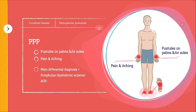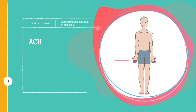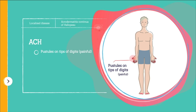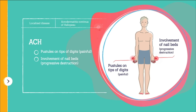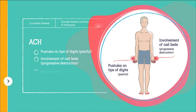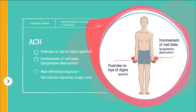The main differential diagnosis for PPP is pompholyx, also known as dyshidrotic eczema. In PPP, the nails may be affected, which can make it difficult to differentiate clinically between PPP and ACH. ACH presents with painful pustules on the tip of one or more digits, affecting the fingers more often than the toes. There is always nail involvement, and the disease may result in progressive destruction of the nail apparatus and eventually lead to bone damage. The main differential diagnosis is nail infection caused by bacterial, fungal, or viral agents.